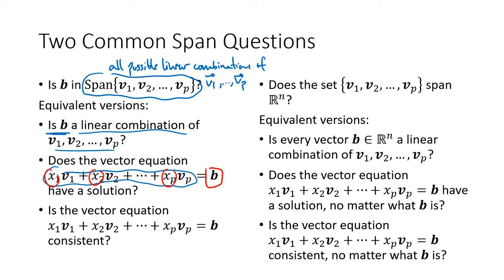The question on the right is a very different kind of question. There is no b. It just asks: does the set v1 through vp span R^n — sometimes phrased as 'span all of R^n'? This is asking whether every possible vector b can be obtained as a linear combination of v1 through vp. Checking them one at a time would take forever, so we use a different approach: the spanning columns theorem, which we'll go through another example of in this video.